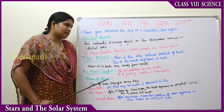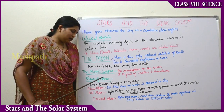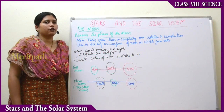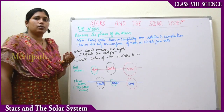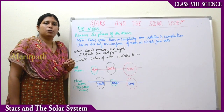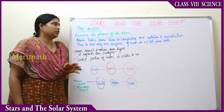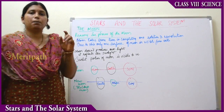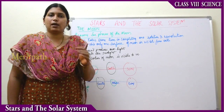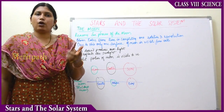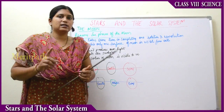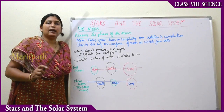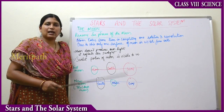Now let's understand why these phases of the moon occur. The moon takes the same time to complete one rotation and one revolution. The period of rotation and revolution is the same for the moon. Just as the Earth rotates and revolves around the sun, the moon also rotates and revolves, but with equal periods for both.